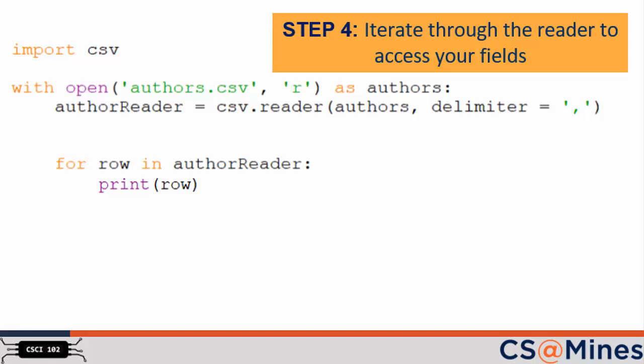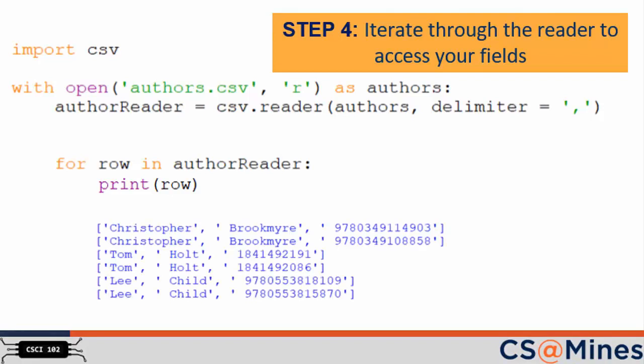Step 4: iterate through the reader to access your fields. We need a for loop to access each row within our CSV file. Each row within the author reader will be a list, so we can print each row that we read in this manner. For example, with the data provided earlier, the output would look like this.